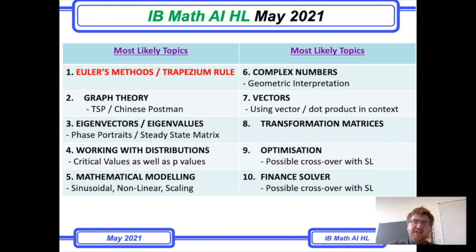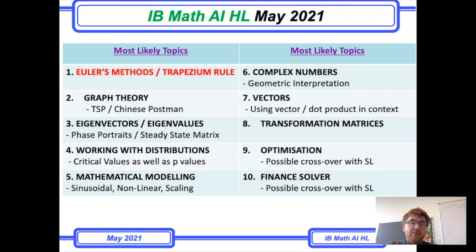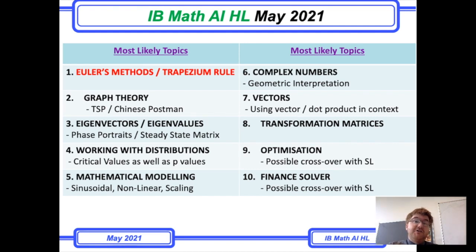Number three is eigenvectors and eigenvalues. This can be used in two different ways. The IB release paper went down the line of phase portraits and tied it in there. But there could also be a steady state matrix question with eigenvectors and eigenvalues, which is similar to many questions on Revision Village. So make sure you're ready.